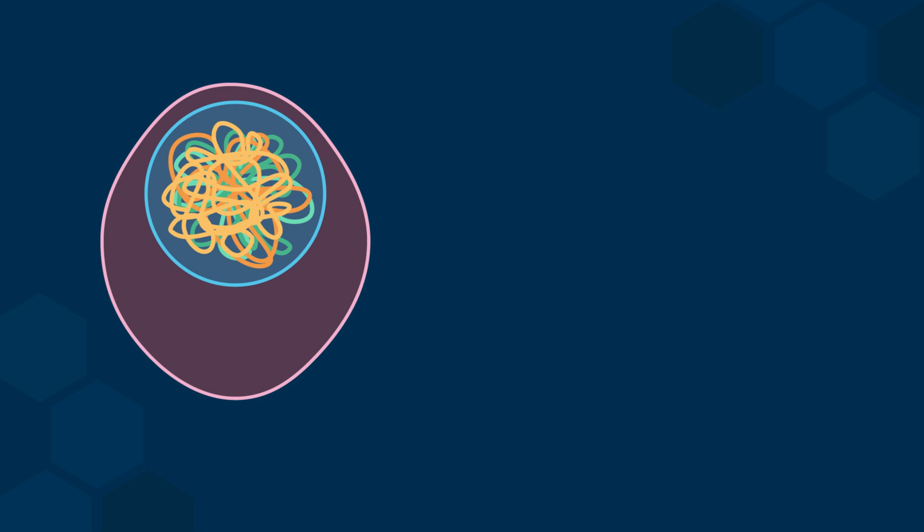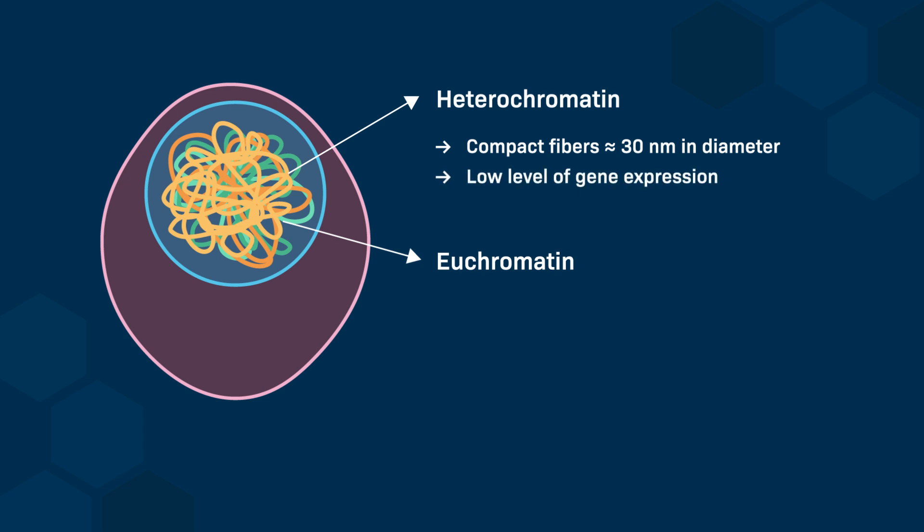During interphase, chromatin is organized into two main types: heterochromatin and euchromatin. Heterochromatin forms relatively compact fibers with a diameter of around 30 nm and is associated with a low level of gene expression. Euchromatin consists of less compact fibers, approximately 10 nm in diameter, and is characterized by a higher level of gene expression.